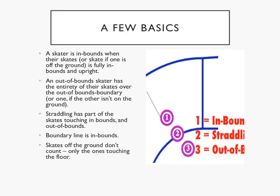Let's start with a few basics, some of which get overlooked. First, a skater is considered inbounds when their skates are fully inbounds and the body is upright. For most purposes, a down skater is the same as an out-of-bounds skater — they should both not be a target, nor should they be blocking. Out-of-bounds is having the skates fully touching out-of-bounds. Straddling is both, with a portion of the skates touching out-of-bounds and a portion touching inbounds. The boundary line is considered inbounds. The easy way to picture straddling is one skate fully out-of-bounds and one skate fully inbounds, but any portion out-of-bounds is enough to have the skater considered to be straddling.